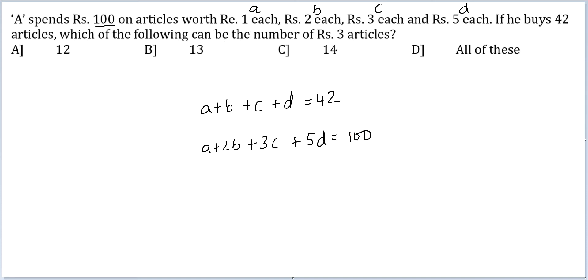We are asking which of the following can be the possible number of rupees 3 articles? So, if C is 12, you got A plus B plus D is equal to 30. And A plus 2B plus 5D is equal to 100 minus 36 or 64.